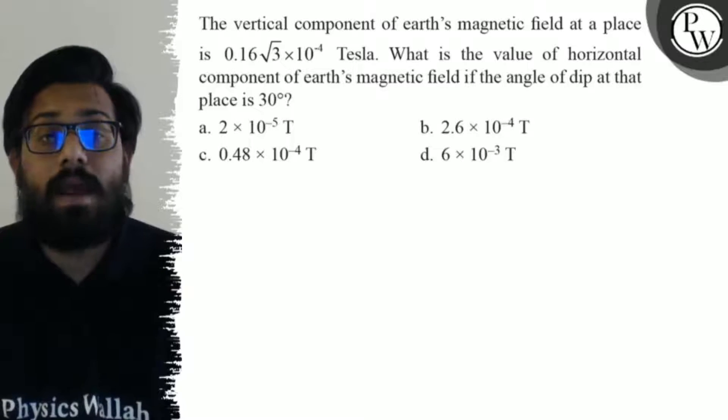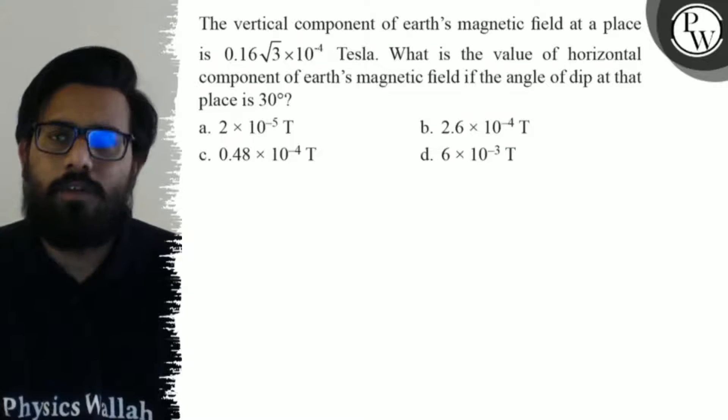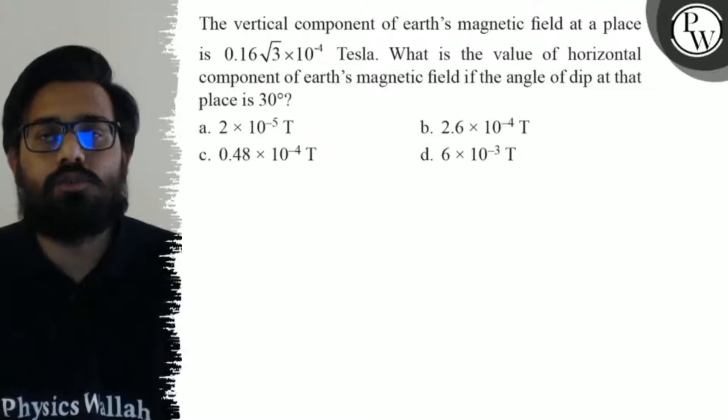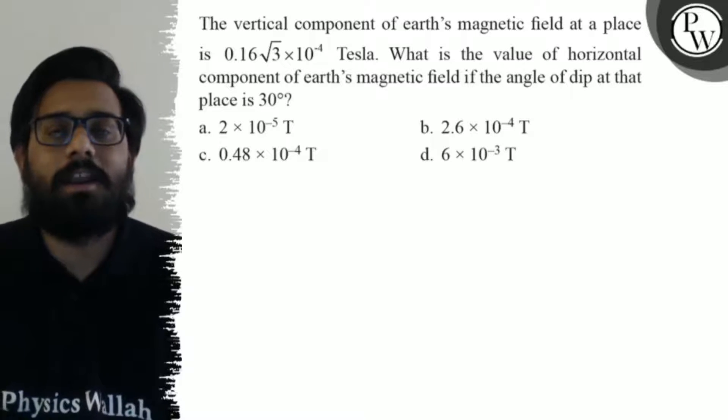Your first option says 2 × 10^-5 Tesla. Second option says 2.6 × 10^-4 Tesla. Your third option says 0.48 × 10^-4 Tesla and your fourth option says 6 × 10^-3 Tesla.